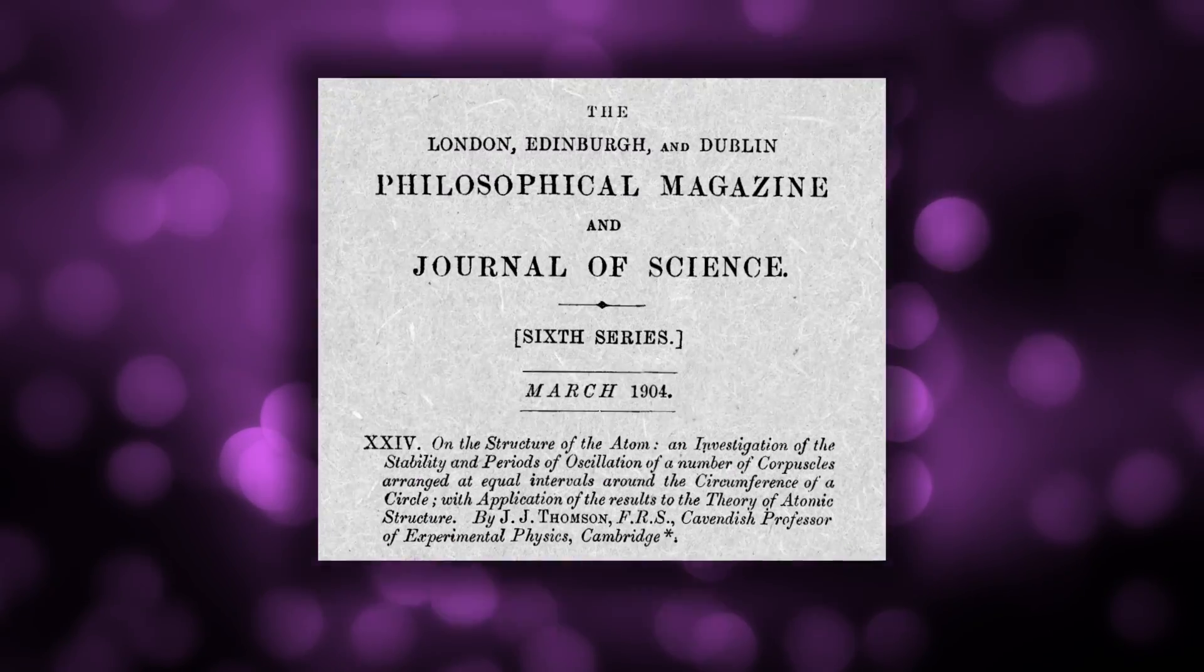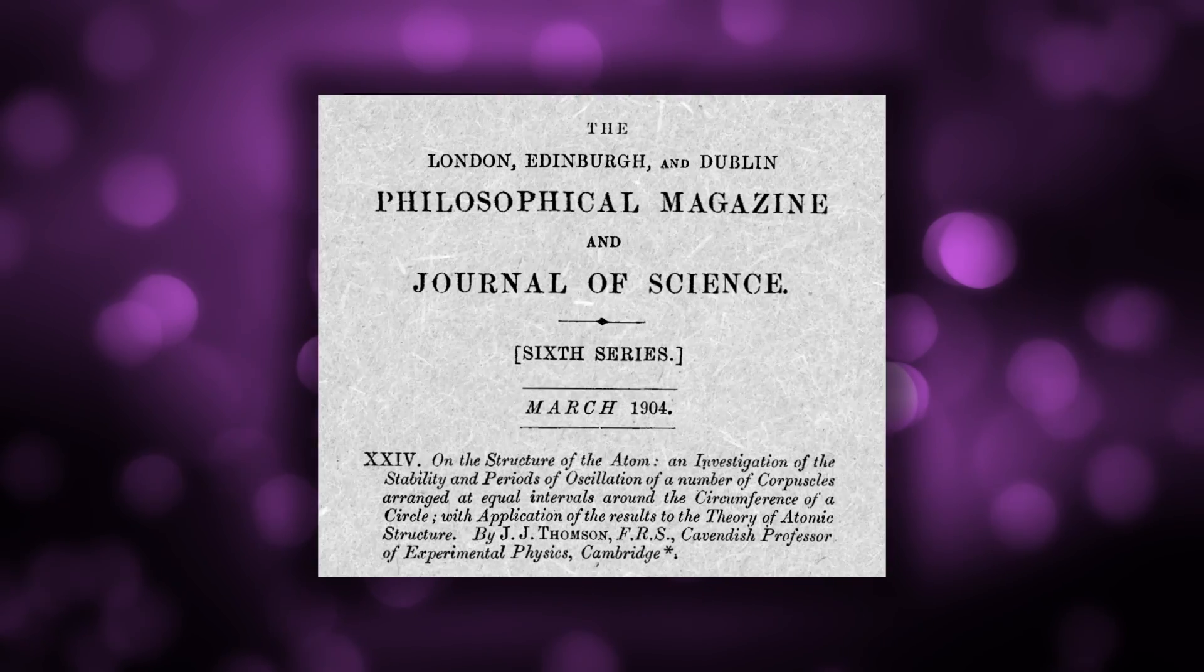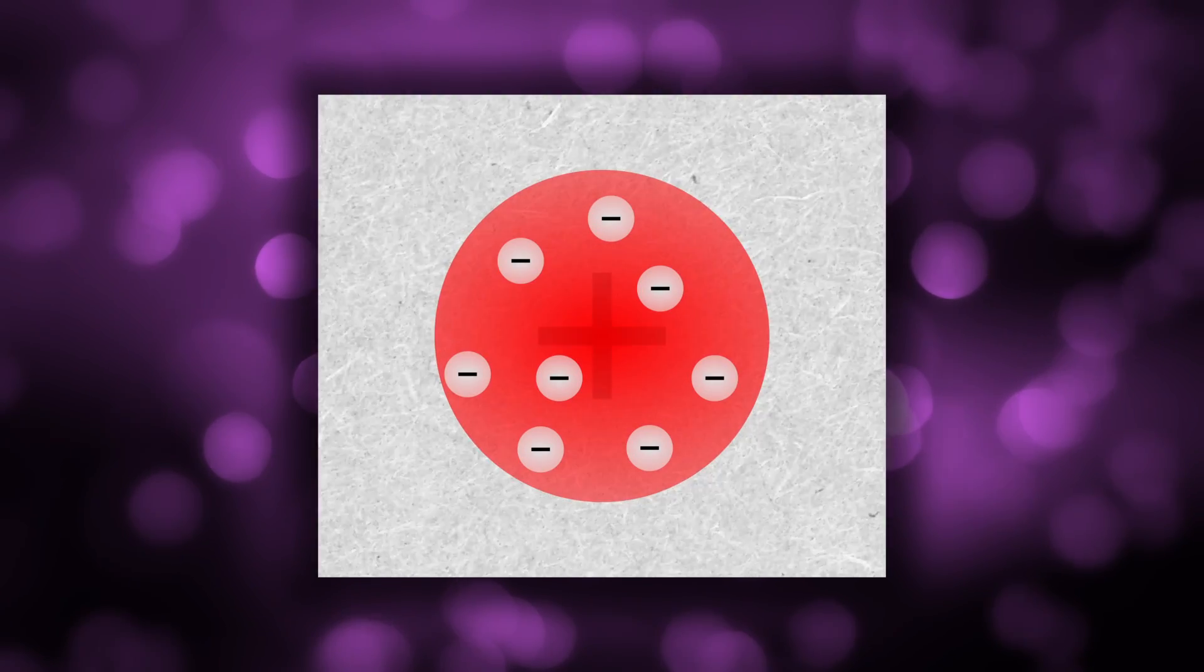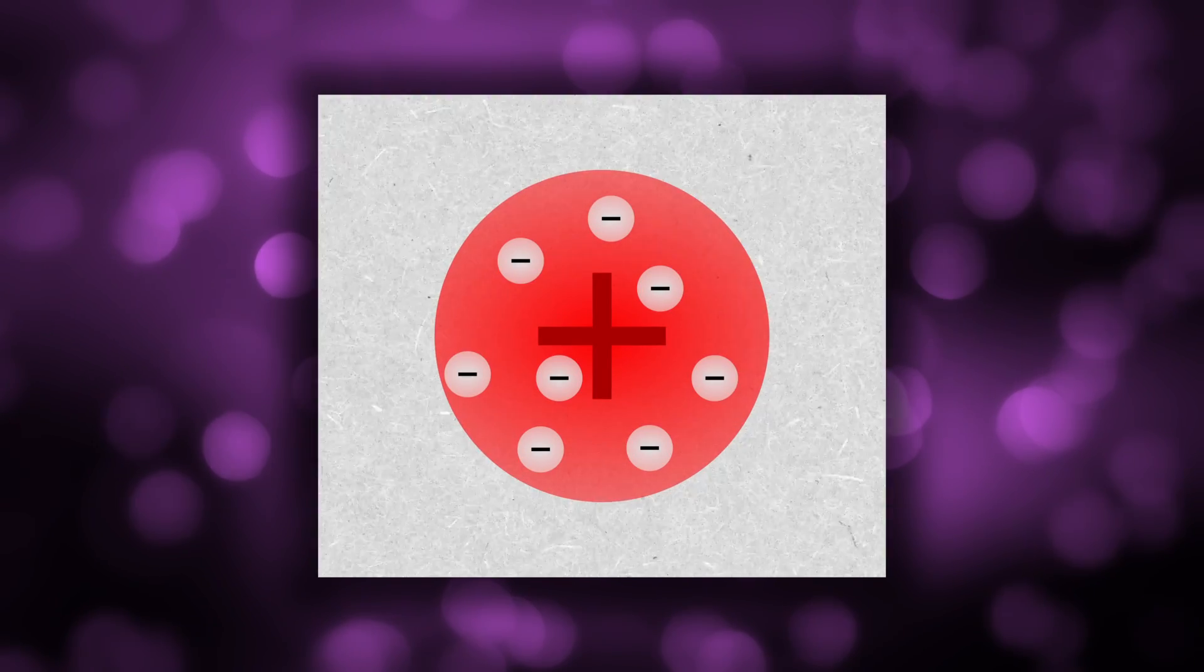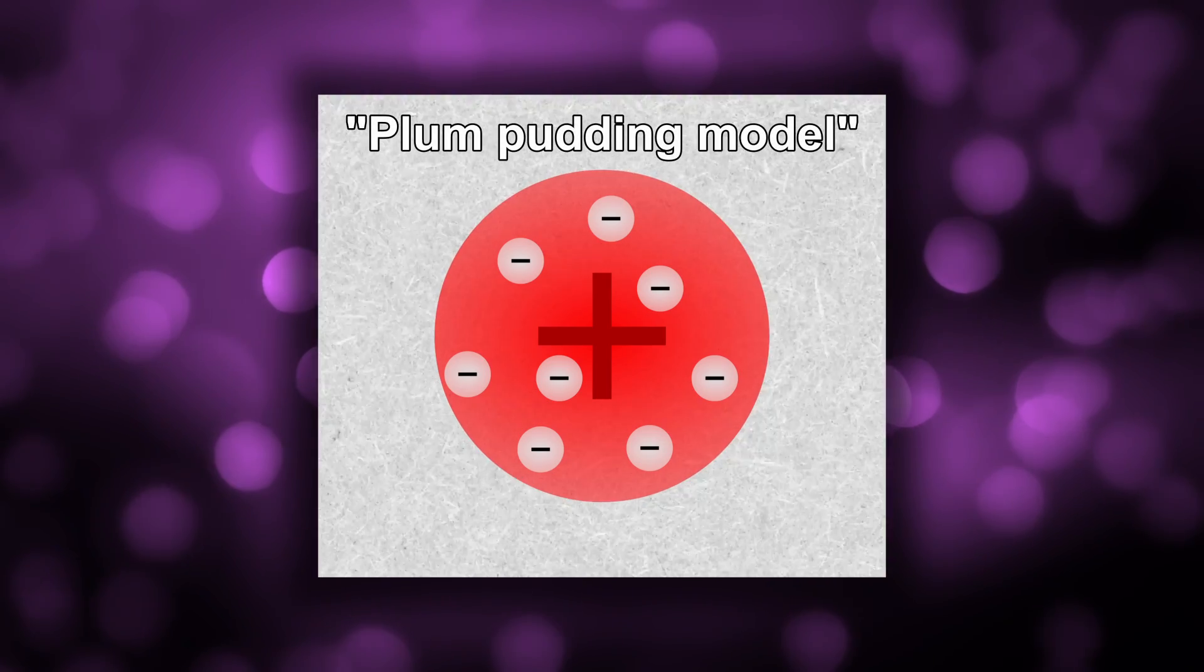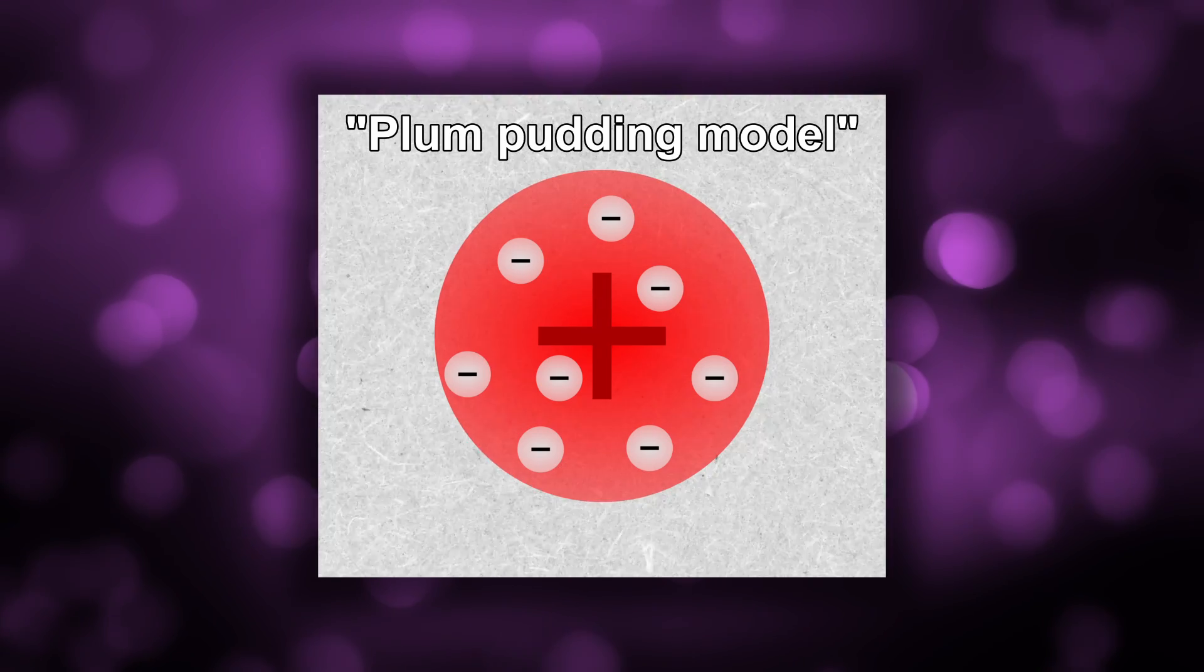In 1904, Thompson published more work where he determined what the atom must look like if it includes these tiny negatively charged particles. He described a model whereby negative electrons are embedded within a larger matrix which must be positively charged since atoms are neutral overall. This model became known as the plum pudding model, with the plums representing the electrons and the rest of the pudding representing the positively charged matrix.